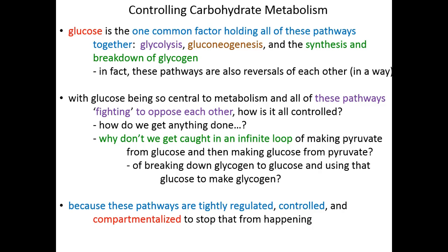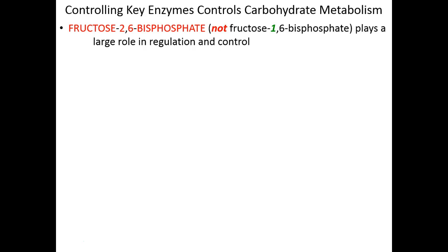Part of what protects the cell from getting stuck in these loops is that individual pathways are tightly regulated, tightly controlled, and often compartmentalized — occurring in different physical locations throughout the cell. By keeping them separate both physically and from a regulation standpoint, we can stop these infinite loops from occurring. Let's take the big picture view and talk about some of the key enzymes controlling carbohydrate metabolism and what those control signals are.